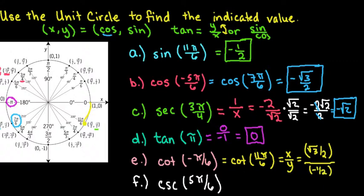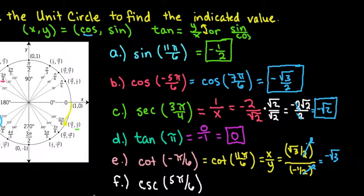So if I simplify this by multiplying both the numerator and the denominator by 2, so if I multiply this top part by 2 and this by 2, essentially I'm multiplying by 1, that will just cancel out my two denominators, and I'm left with the square root of 3 divided by negative 1, which is just the negative square root of 3. So the cotangent of negative pi over 6 is negative square root of 3.